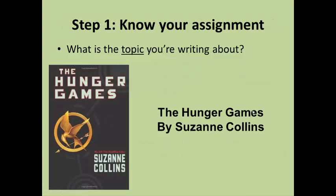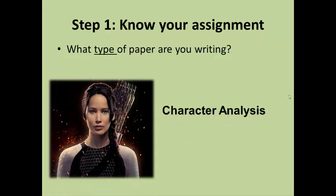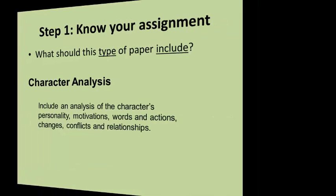The first step in writing an outline is to ask yourself a few questions. What is the topic that you're writing about? For this example, we will be using The Hunger Games. What type of paper are you writing on your topic? For this example, we will be doing a character analysis of Katniss Everdeen from our broader topic, The Hunger Games.